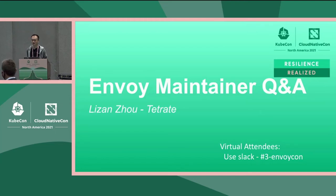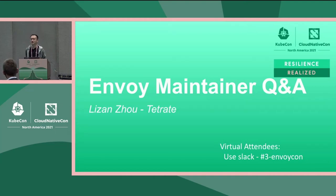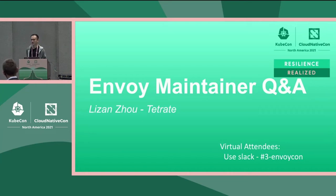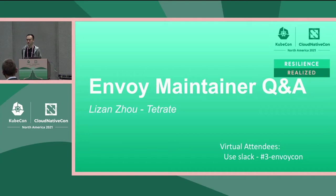We don't have any backward compatibility assurance on the C++ filter API — that can be changed at any time. The filters in the Envoy mainline repo are tested against all API changes, so we do update how they use the filter extension API. But if you have your own in-house filters, when you upgrade Envoy you might need to update your code. If you use the WebAssembly API for interaction with Envoy, filter API changes are less likely to affect you.